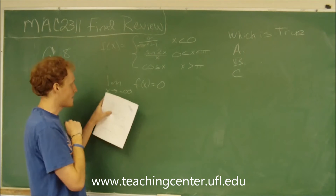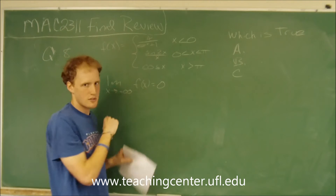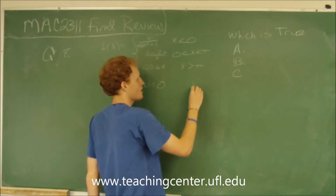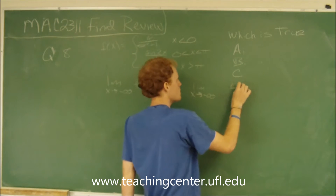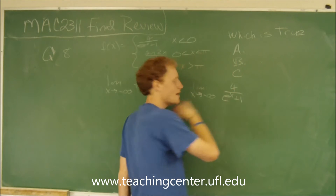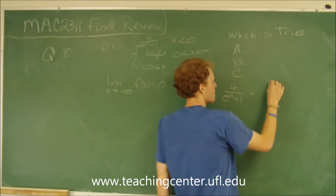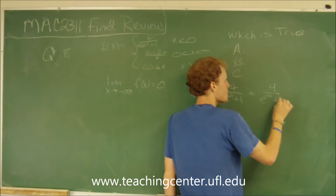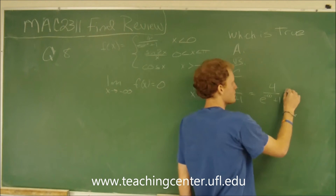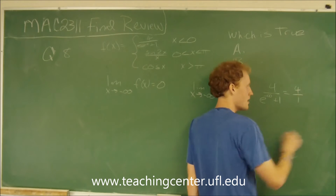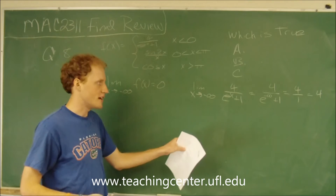Let's find the limit as x goes to negative infinity. Since it goes to negative infinity, we want to choose the top piece. So we find the limit as x approaches negative infinity of 4 over e to the x plus 1. If we plug in directly, we get 4 over e to the negative infinity plus 1. Since e to the negative infinity is 0, it equals 4 over 1, which equals 4. So the limit as x goes to negative infinity is 4.